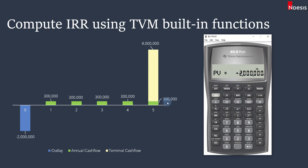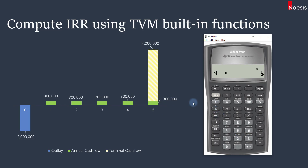The three hundred thousand is an annuity, so enter three hundred thousand and press PMT. N is equal to five for five years — also five times three hundred thousand.